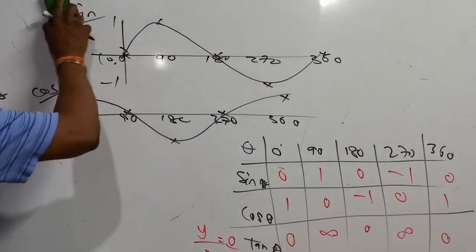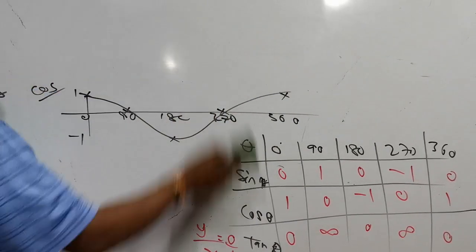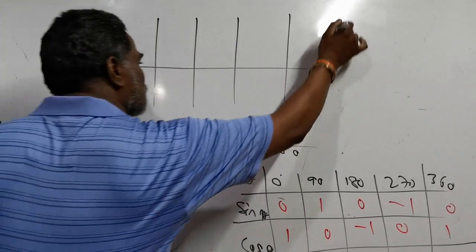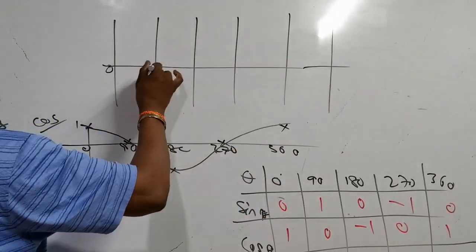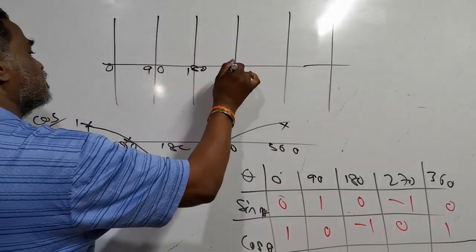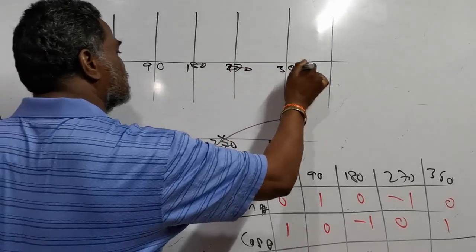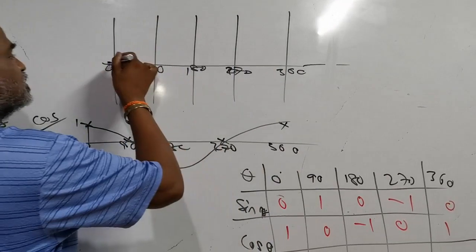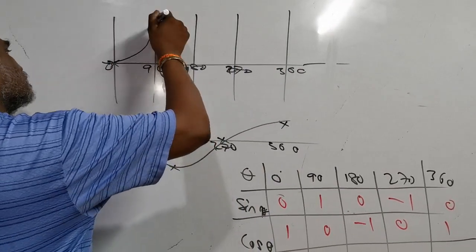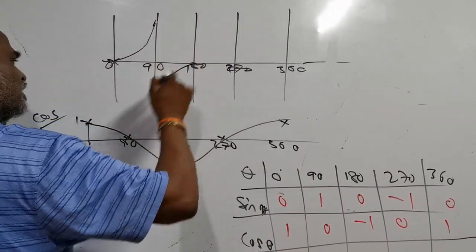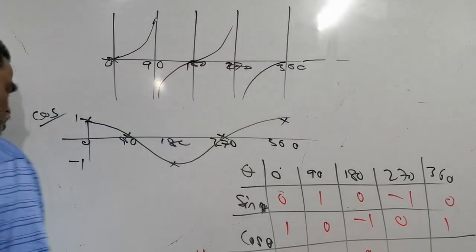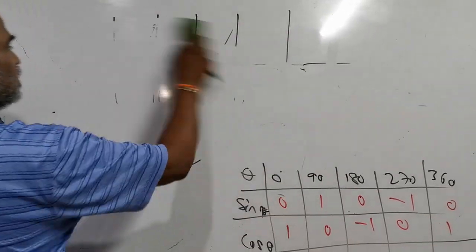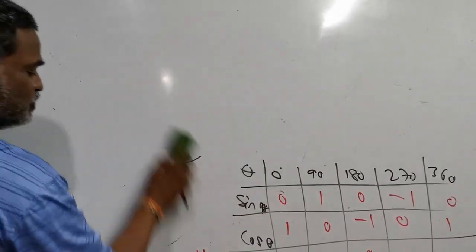For the tangent graph it is a bit different. At 0° tangent = 0, at 90° tangent goes to infinity — the graph goes towards but cannot touch the asymptote line. This asymptote is called a tangent asymptote. The graph repeats after 180°. This is the tangent graph.